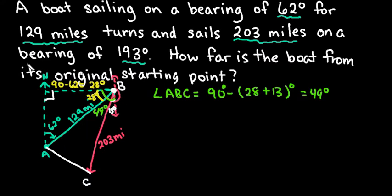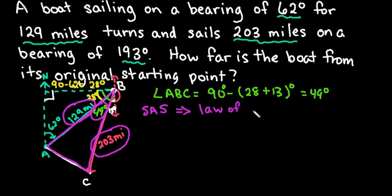So 49 degrees is my angle inside of here. What I'm going to be using is triangle A, B, and C. We're looking at this purple triangle right here. We are given that the side length is 129, angle B is 49 degrees, or angle ABC because I have more than one angle at that point, and then the other side is 203 miles. So I have the relationship side-angle-side, and when I'm given side-angle-side, we are going to use law of cosines to help solve for the missing side.